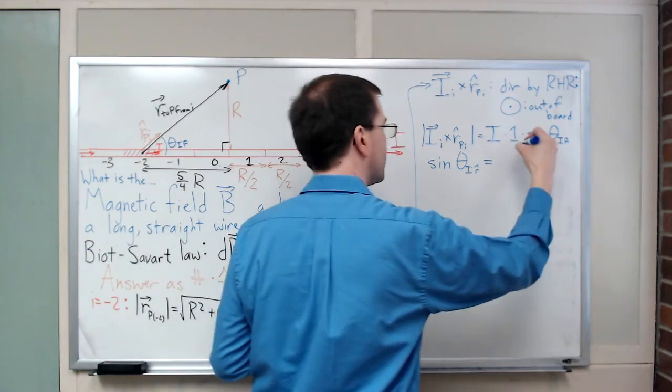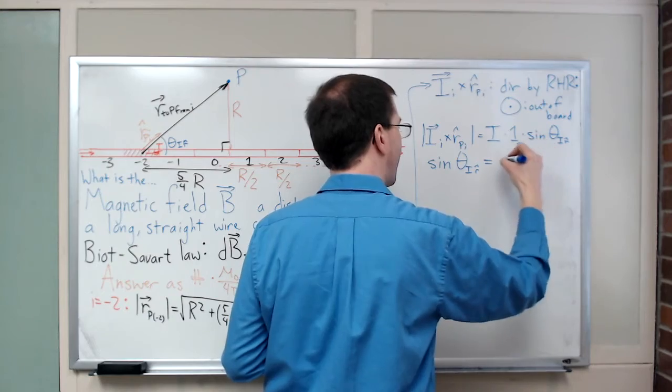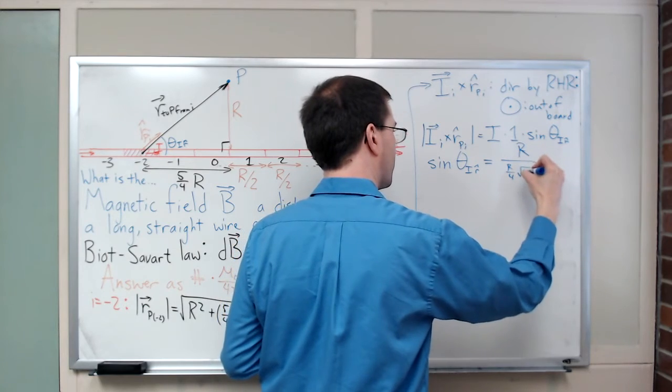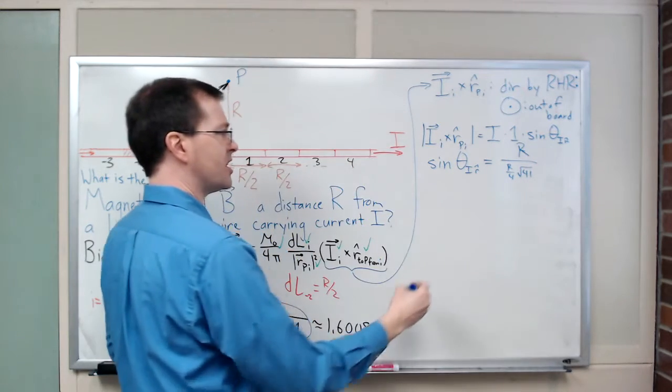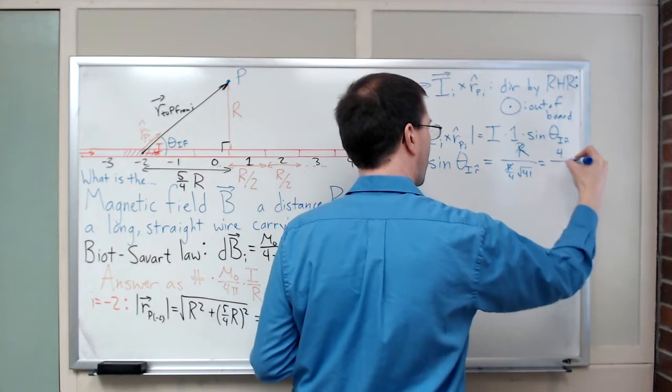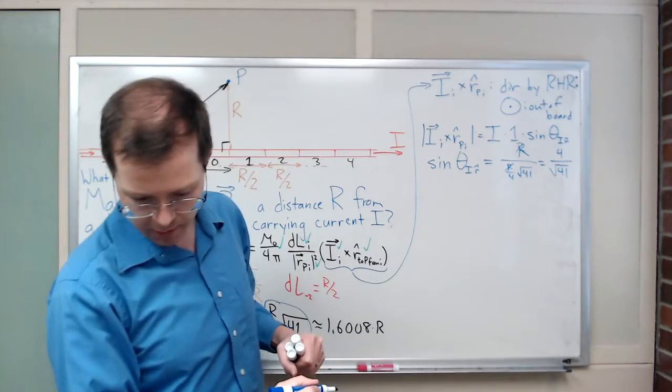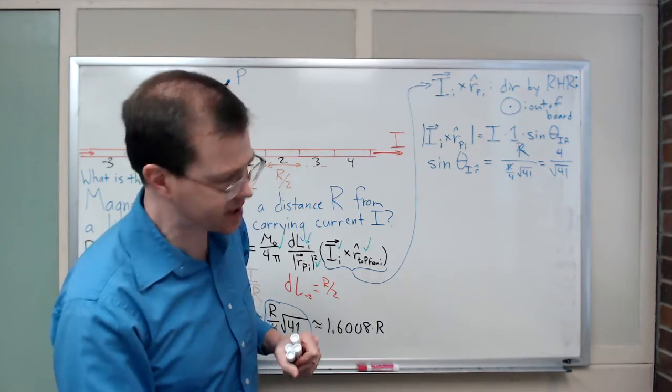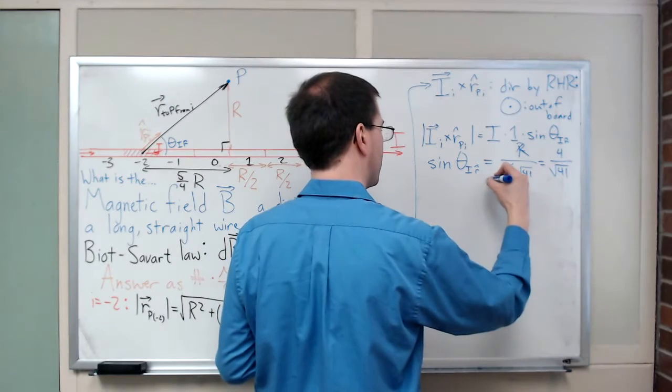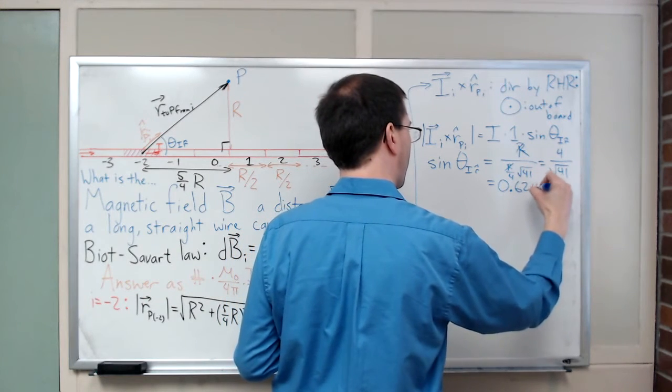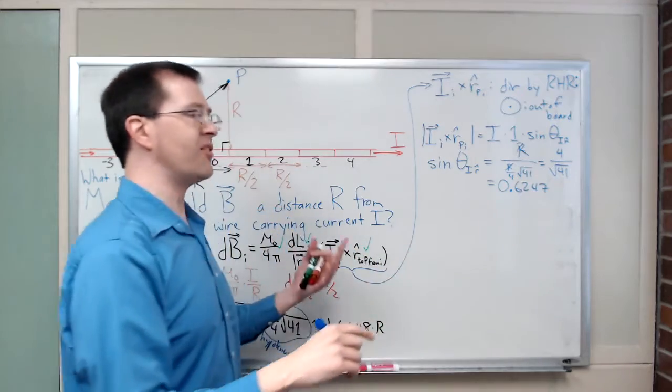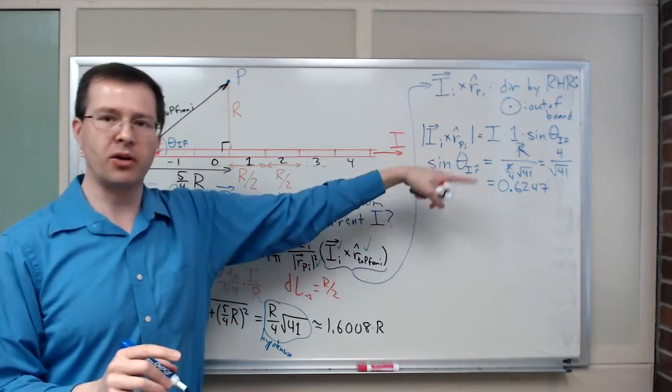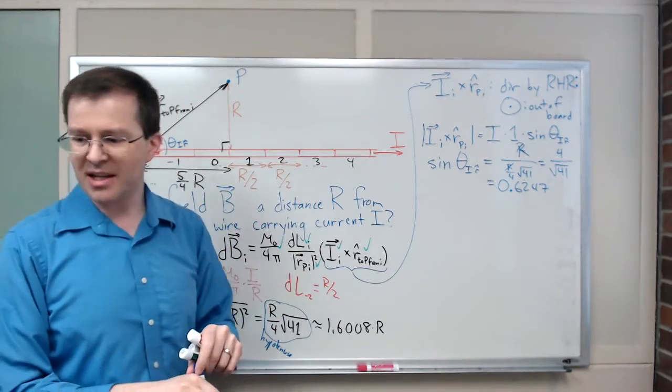Sine of theta for this case is going to be opposite divided by the hypotenuse, which is R over 4 times the square root of 41. So in other words, the R's cancel out and I just get 4 over the square root of 41. If you want a number for that, I think I calculated that somewhere, that is 0.6247. So this is about 0.6247 is my sine of theta in this case. You can do this in lots of ways, but if I see a right triangle I like just doing opposite over hypotenuse.